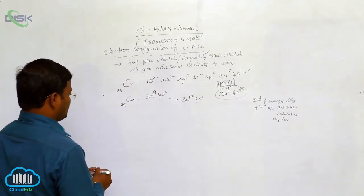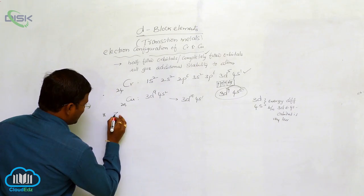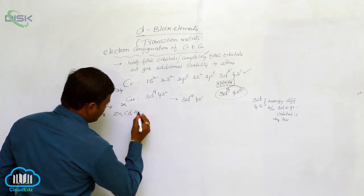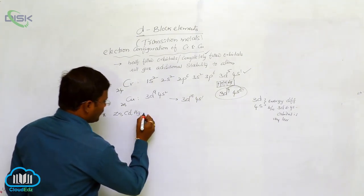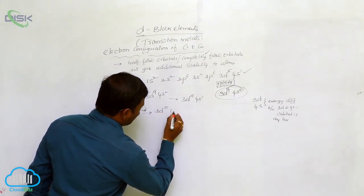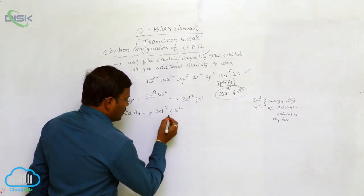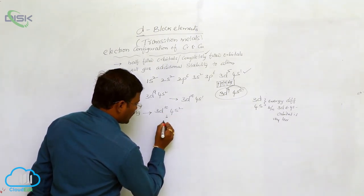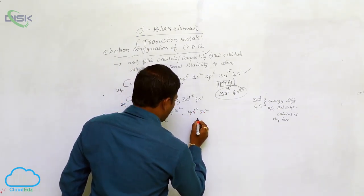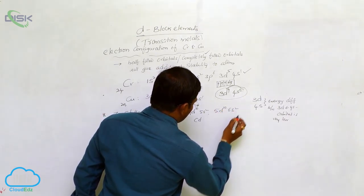When we observe the valency shell electron configuration of these elements, they show 3D10-4S2 for zinc, 4D10-5S2 for cadmium, and 5D10-6S2 for mercury.